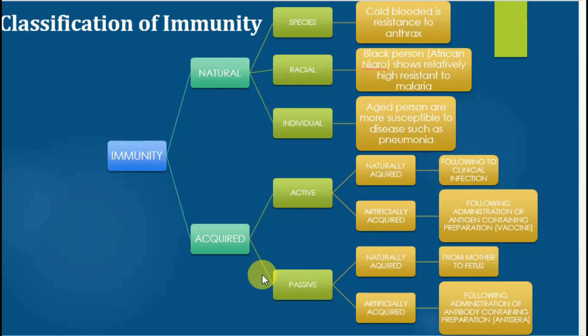Now what is passive immunity? In passive immunity, the antigen does not enter — instead, the antibody is directly injected or enters the body. Passive immunity is for treatment purposes, while active immunity is for protective or preventive purposes. There are also two types of passive immunity: naturally acquired passive immunity and artificially acquired passive immunity.